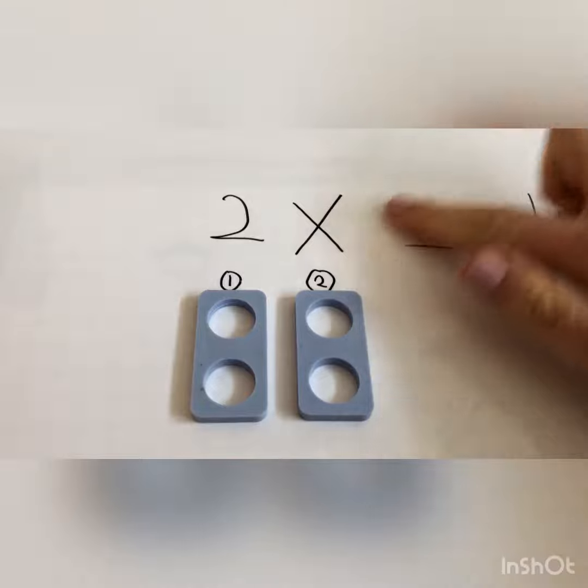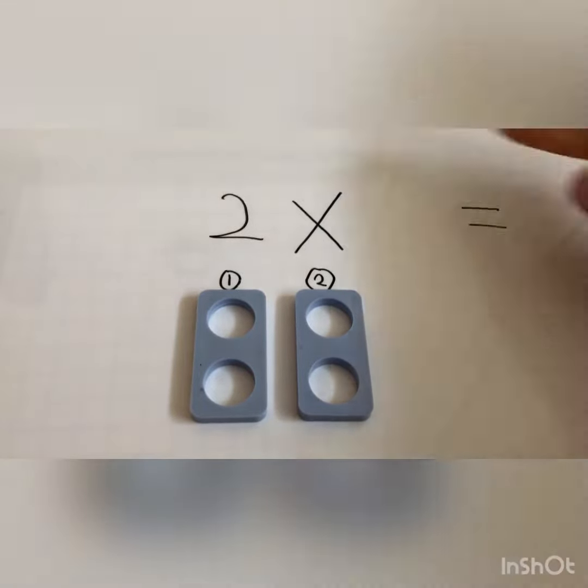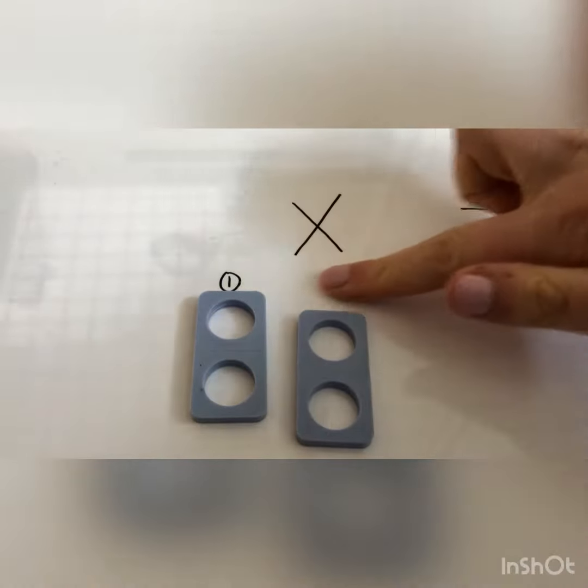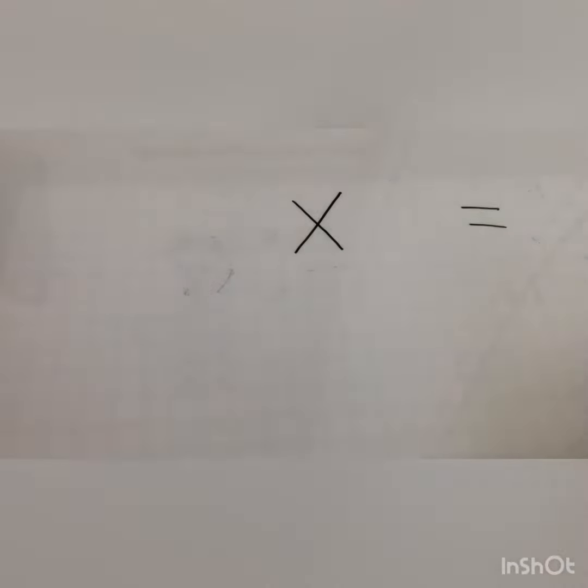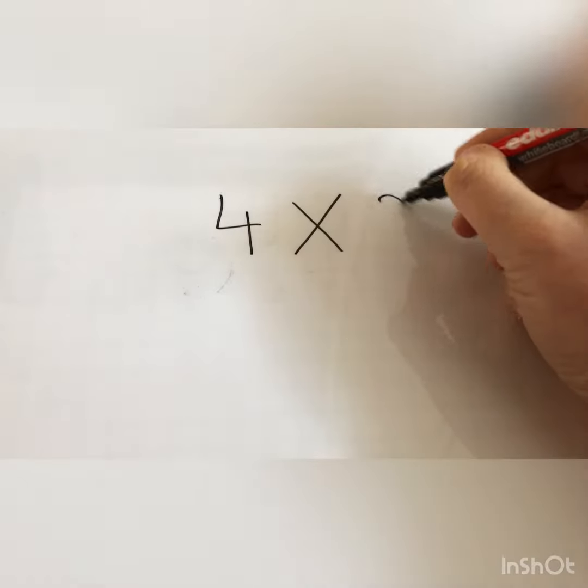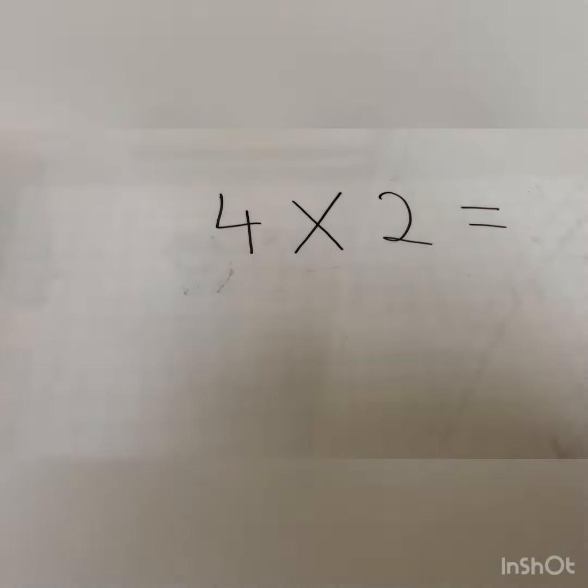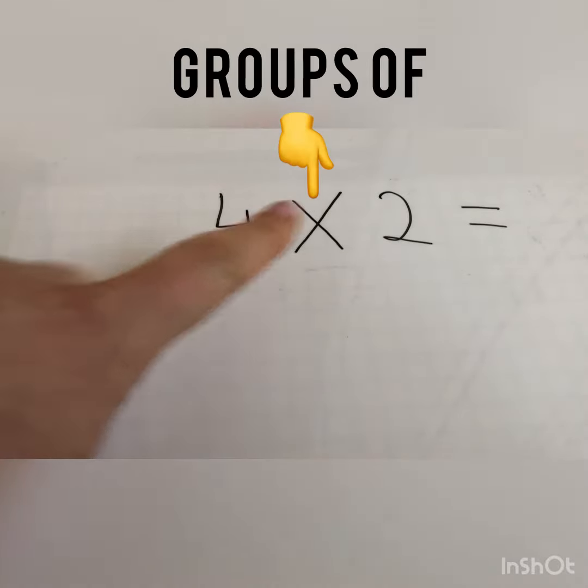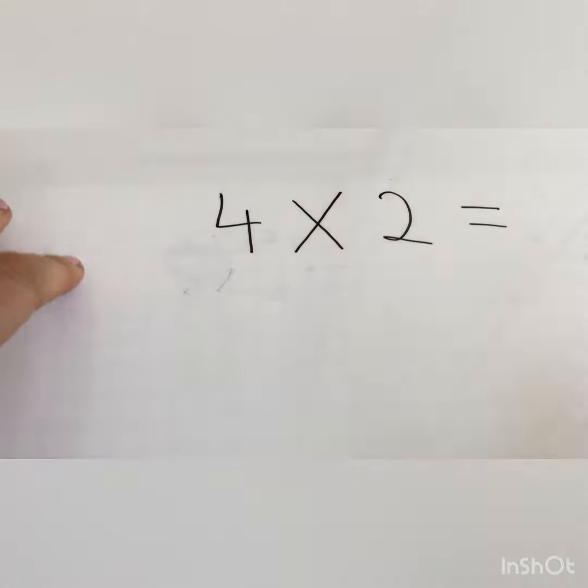Okay, let's change the question. This time we are going to have four groups of two equals. So this time I am going to need four groups with two in each group.